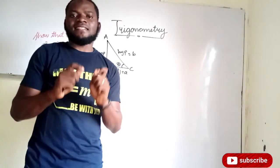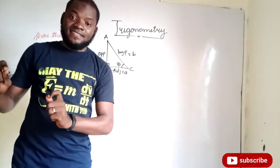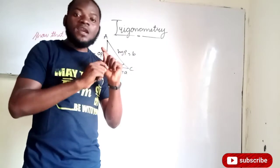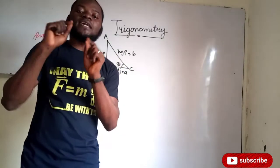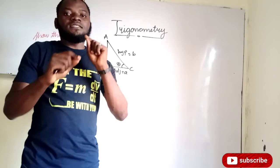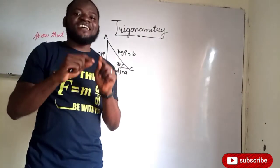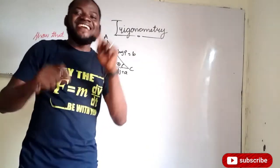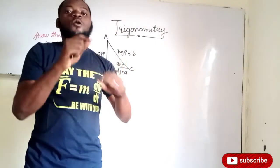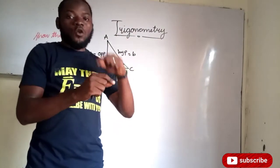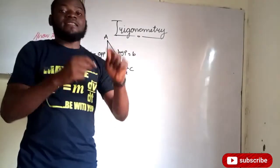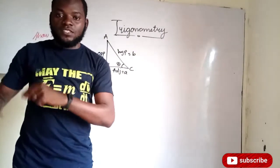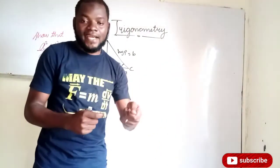We have just three trig ratios: sine, cosine, and tangent. They all have reciprocals — the reciprocal of sine is what we call cosecant, the reciprocal of cosine is what we call secant, and the reciprocal of tangent is what we call cotangent. We read them as cosec, sec, and cot.